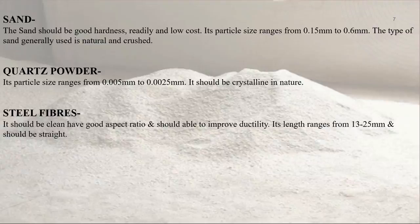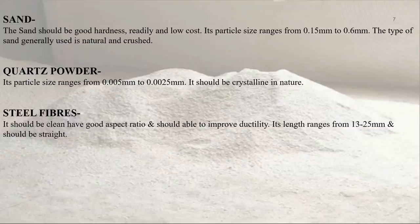Sand: the sand should have good hardness, be readily available and low cost. Its particle size varies from 0.15 to 0.6 mm. The type of sand generally used is crushed and natural. Quartz powder: its particle size ranges from 0.005 mm to 0.0025 mm and it should be crystalline in nature.